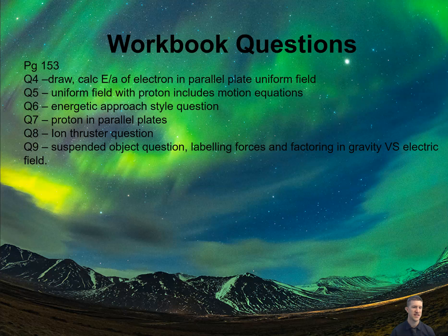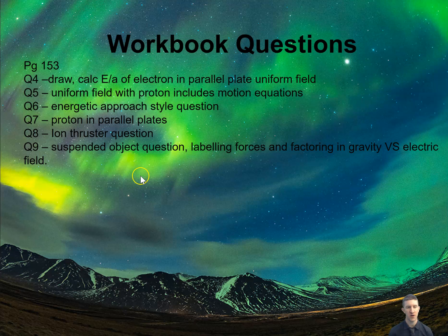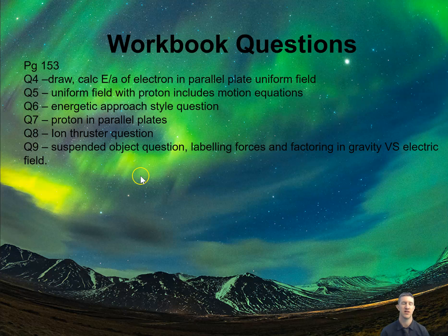For this section, there are questions 4 to 9 on page 153. Question 4 covers drawing, calculating electric field strength, and acceleration in parallel plates. Question 5 involves a uniform field with a proton using equations of motion. Question 6 gives an energetic approach style question — using energy rather than kinematics. Question 7 is protons in parallel plates. Question 8 is an ion thruster question — we discussed ion thrusters in conservation of momentum for propulsion; now we look at the electric field side. Question 9 is a suspended object question.